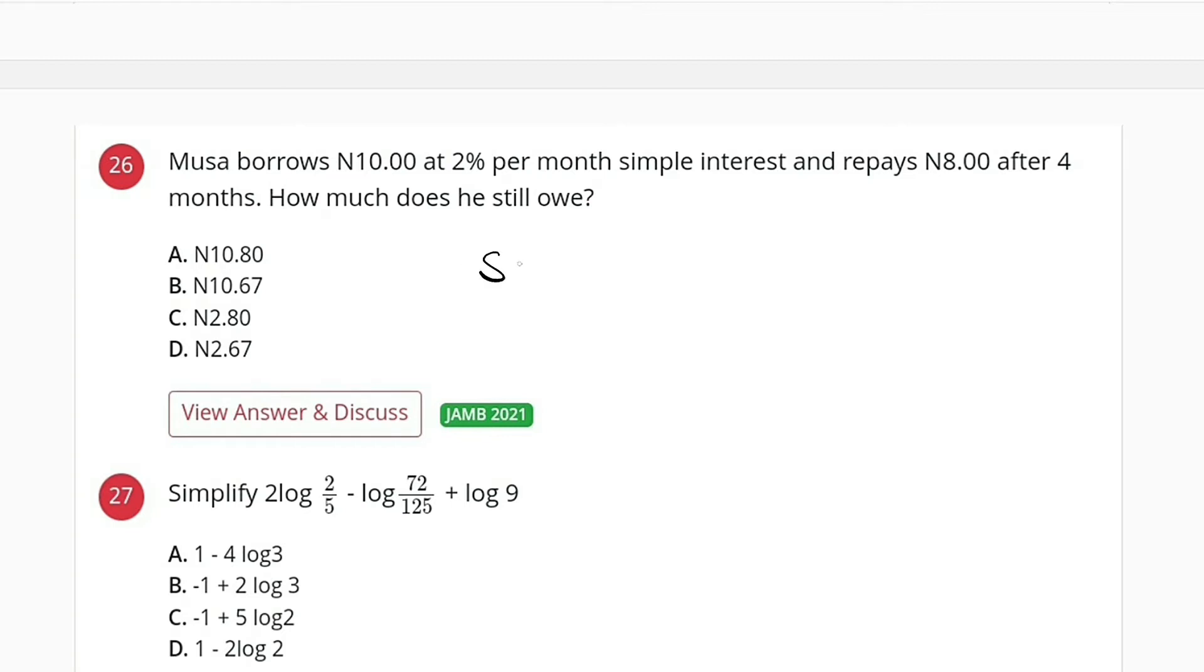This is also simple interest. We have simple interest is equal to principle times rate times time divided by 100.